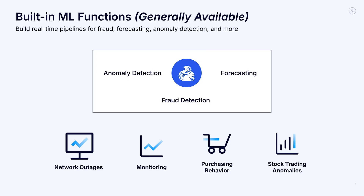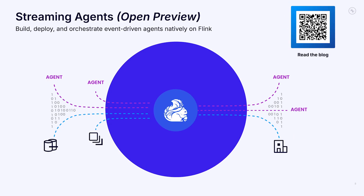So how do you build the agent? With streaming agents, they enable you to build, deploy, and orchestrate event-driven agents natively on Flink. They live directly in your event streams with access to the freshest, most accurate context, and can continuously observe, reason, and act on what's happening in the business in real time.